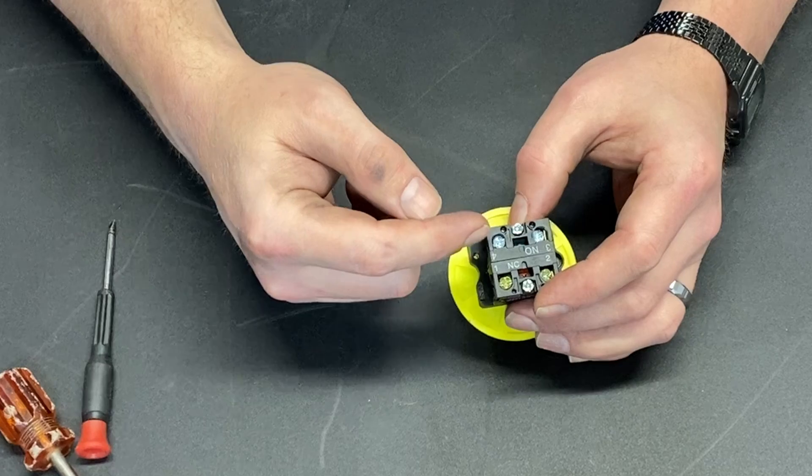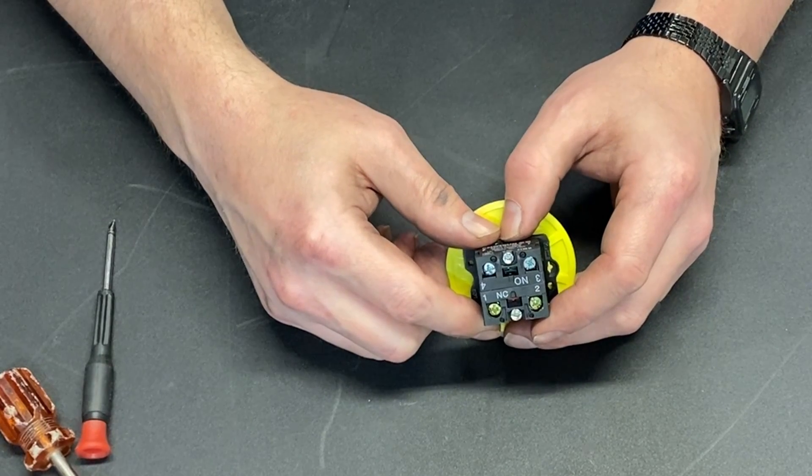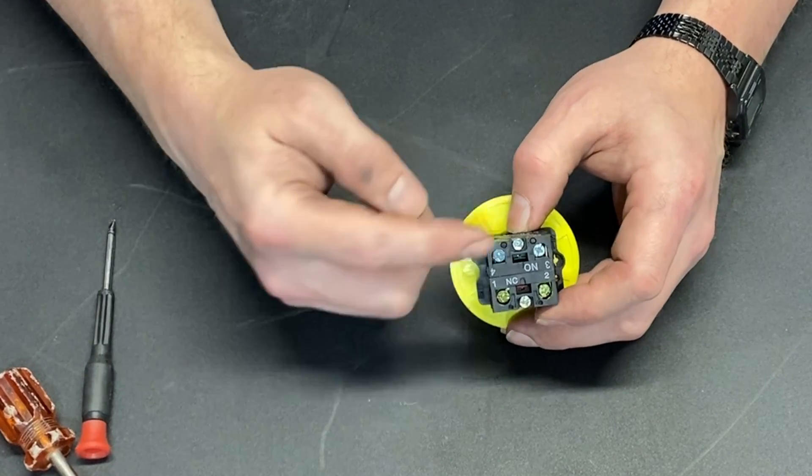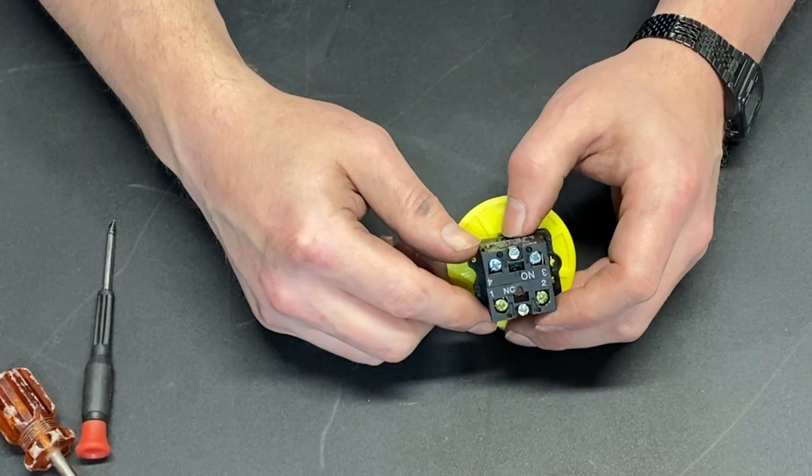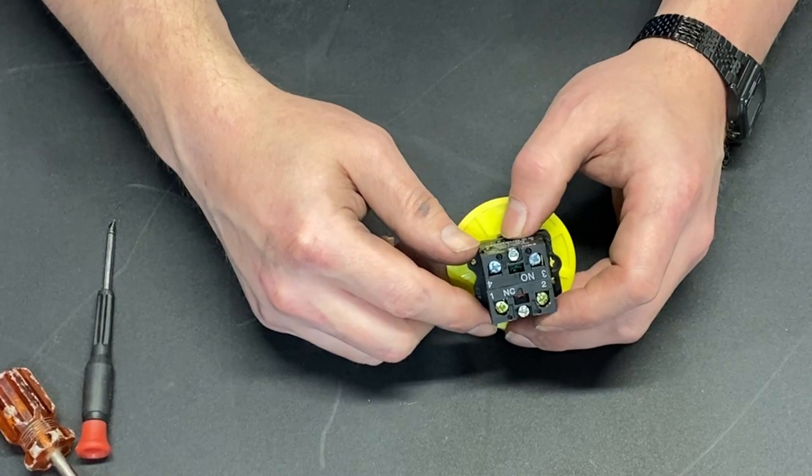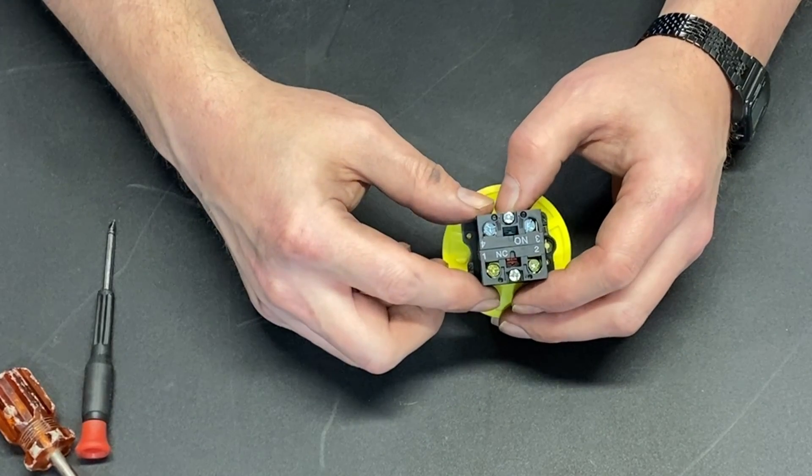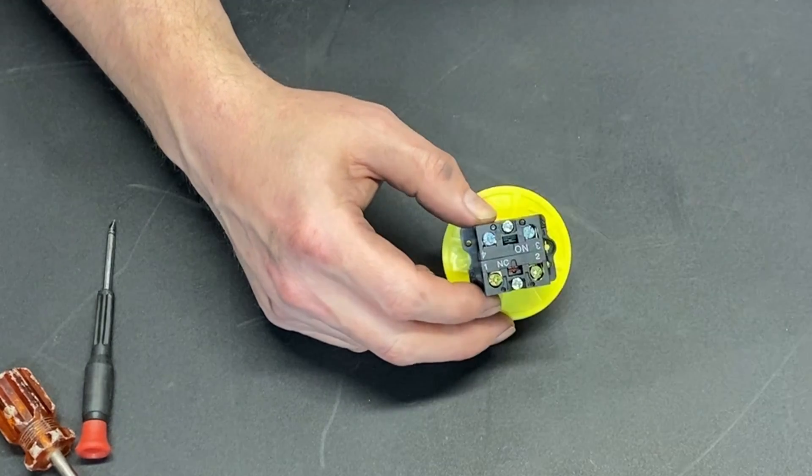This normally open one would be for something else, something that might signify that we have a problem. Maybe that's tied to an alarm. Maybe that's tied to a relay that cuts power to something else. Any number of things could be hooked up with that so that when we're in an emergency situation, something else turns on.